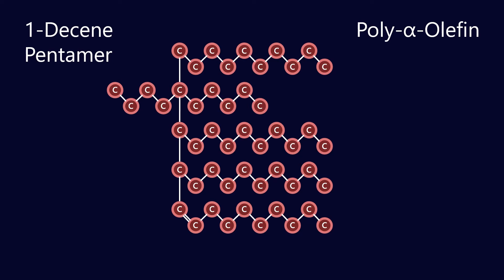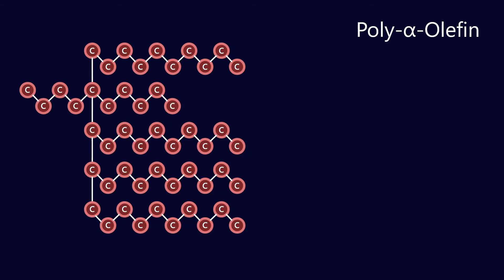Now that process is not necessarily going to be perfect. Sometimes we do get branched structures and so that can alter the properties of the finished product. The final thing to note is that when we connect all of those together through a catalytic process, the end molecule is always going to have a double bond remaining. So we also have to go through a process of hydrogenation where we react the poly alpha olefin with hydrogen gas under pressure to break that final double bond. And the reason we want to do that is for oxidative stability reasons because double bonds are weaker than single bonds.